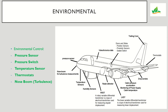Now going deeper into the environmental aspects — the pressure sensor, pressure switch, temperature sensor, thermostat, and nose boom are all used for environmental control operations. I need all this data to make sure the flight is safer and to understand the environment surrounding the flight, whether at 35,000 feet or on the ground. All these measurements are done with environmental control sensors.